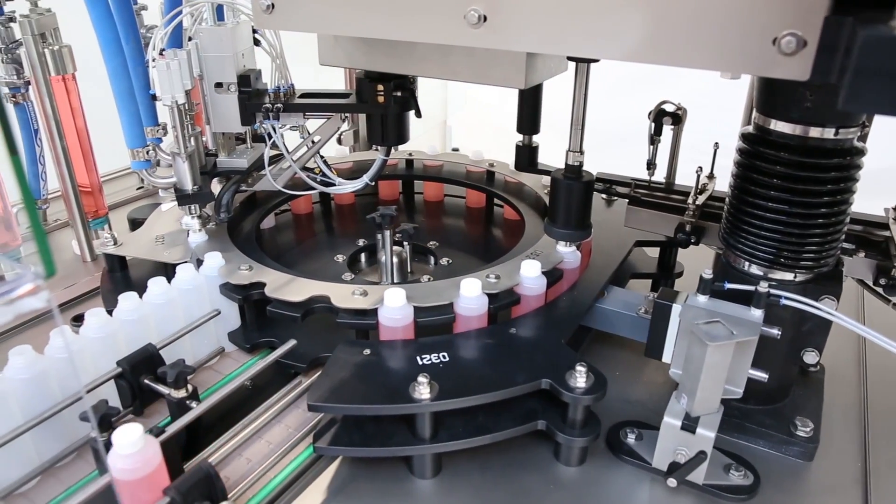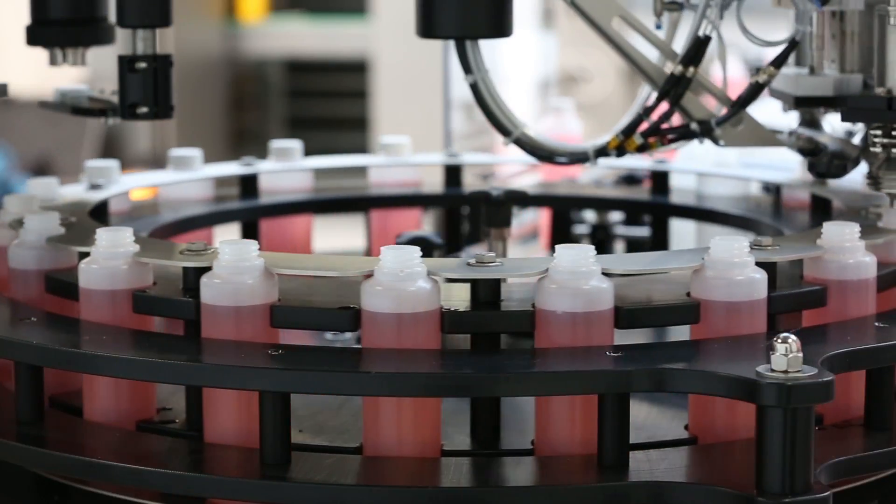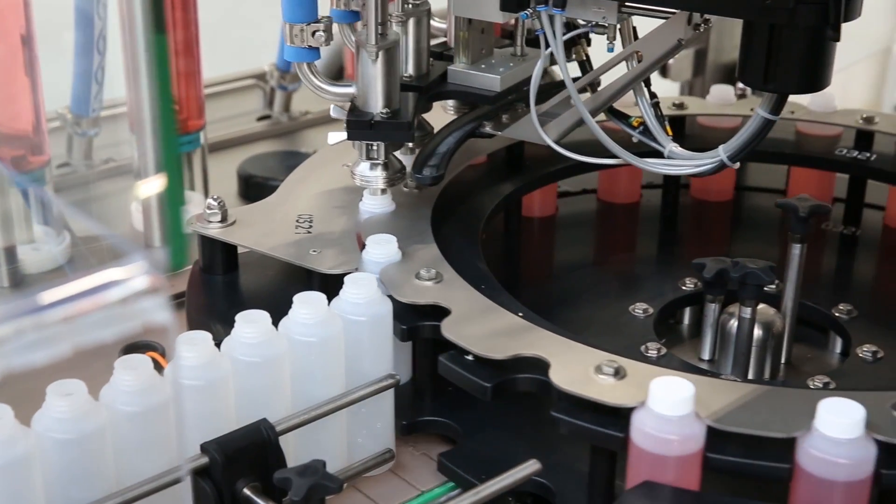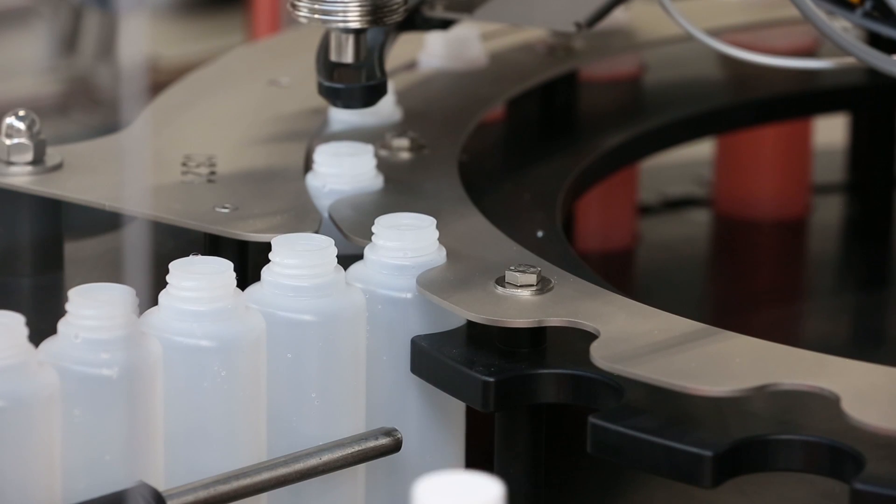The Wisler has a servo-driven star wheel guaranteeing a smooth bottle transfer. Bottles come from an infeed table and are fed into the star wheel.